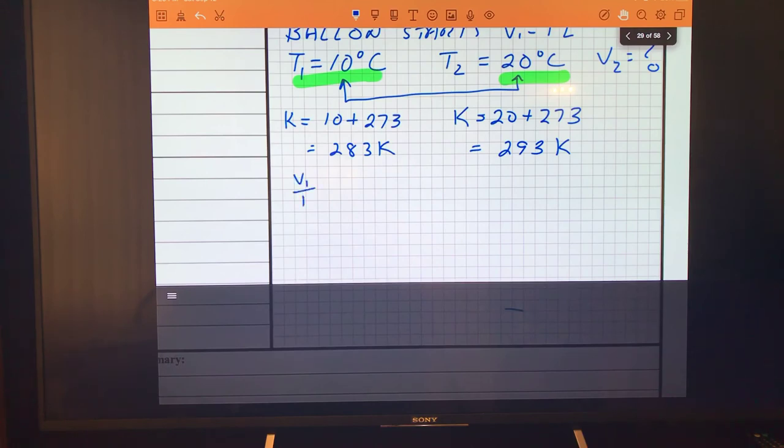V1 over T1 equals V2 over T2. So we start with that initial volume. The initial volume was 1 over 283 for temperature, and I want to know what the new volume will be when the temperature goes up to 293.